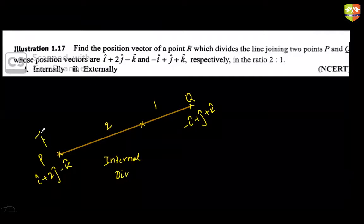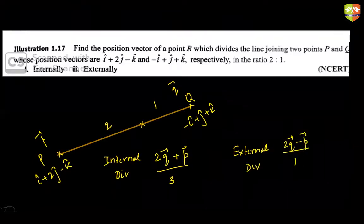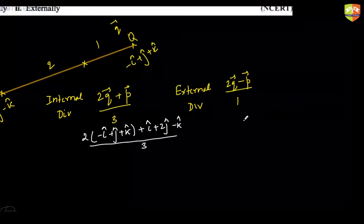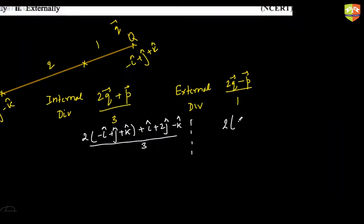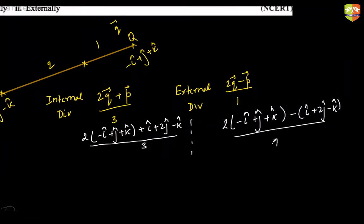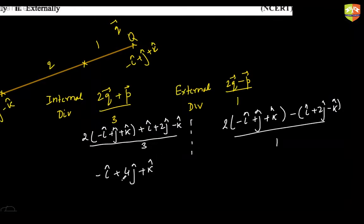For internal division with ratio 2:1, if this is p vector and this is q vector, the result is (2q + p) / 3. For external division it will be (2q - p) / (2 - 1), which is 1. Plugging in the values, internal division gives (-i + 4j + k) / 3, and external division gives -3i + 0j + 3k.